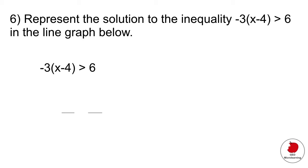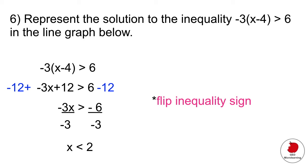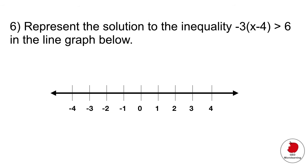So you go ahead and multiply that minus three with the bracket, that gives you this, and then you want to solve for x. So you would subtract 12 from both sides. That gives you that, you divide both sides by minus three. And now, this is really important, because you're dividing by negative number on both sides, that inequality sign is going to flip. You have to remember that. When you divide by negative numbers, that inequality sign is going to flip. So once you know that, now you can go ahead and plot that in your line graph, and it will look like that.